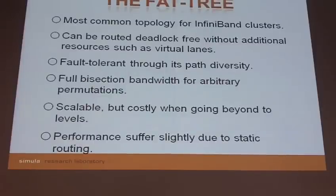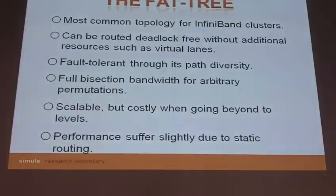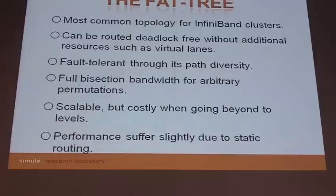So let's start with the fat-tree. As I said, it's the most common topology in use today, and that's for several reasons. It can be easily routed in a deadlock-free manner. It does not require any specific resources in the fabric such as virtual channels. There is no way to create a credit loop in a fat-tree, and it has high path diversity, which makes it good for fault tolerance. If one path fails, you can always fall back on a different path between the same source-destination pair. It can easily support full bisection bandwidth, and with current static routing supported by IB we can get good performance, which can be further improved when adaptive routing becomes available.